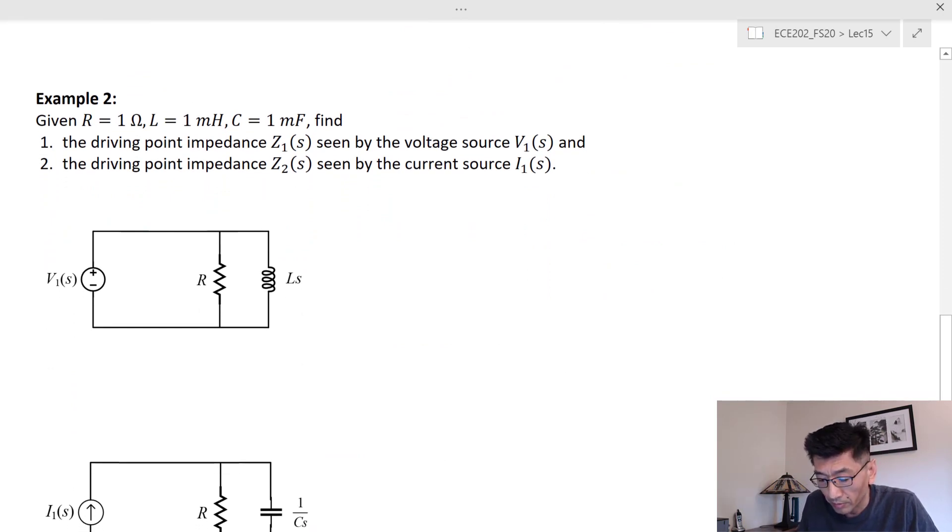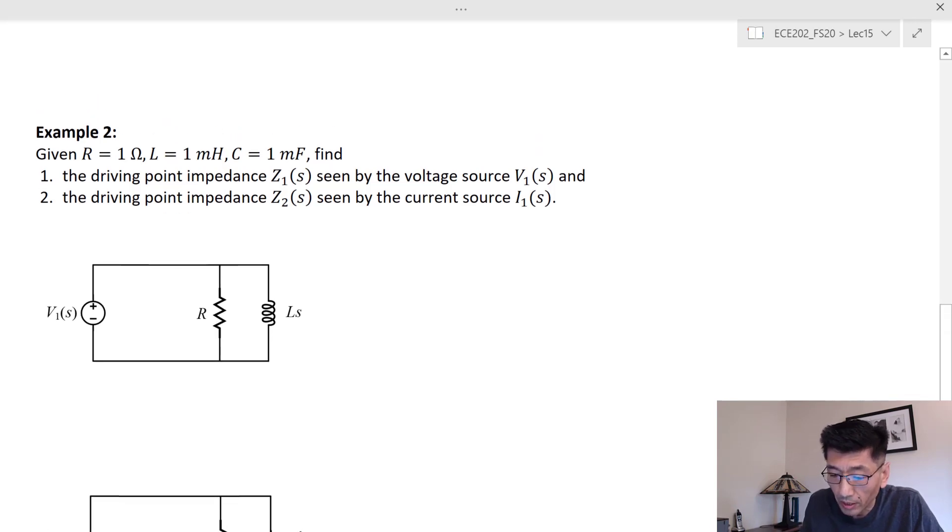Let's say we have an RL circuit. We have R is given as one ohm and L is one millihenry, and we find the driving point impedance Z₁(s) seen by this voltage source.